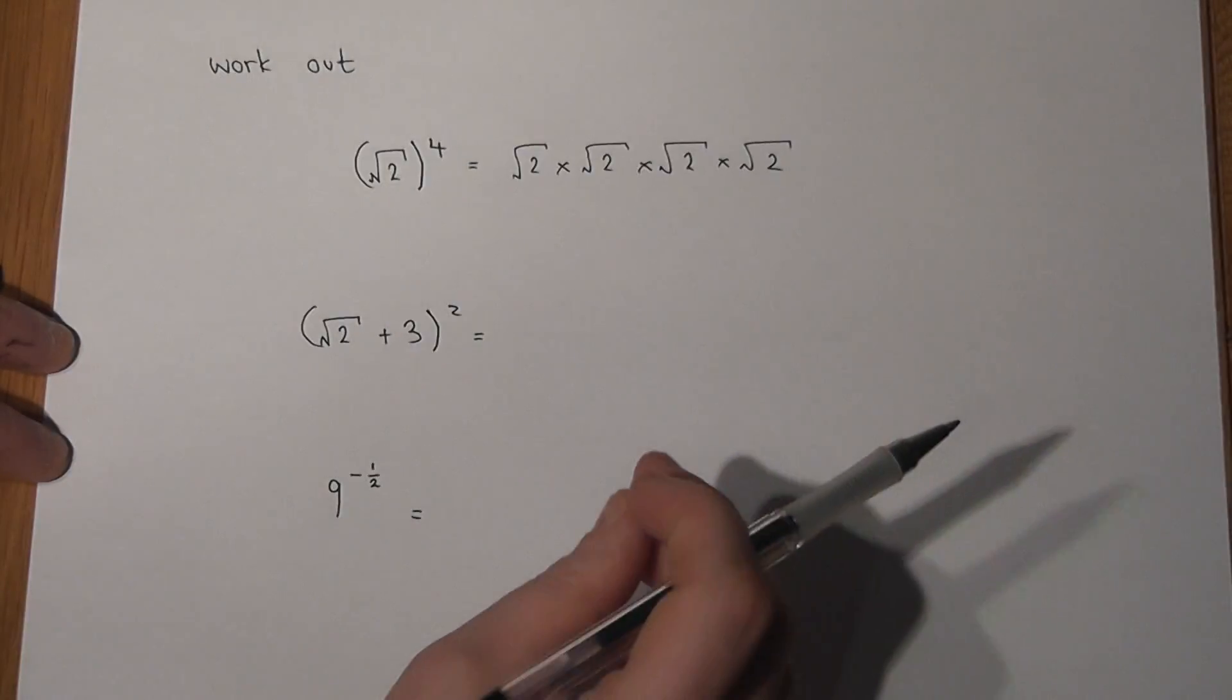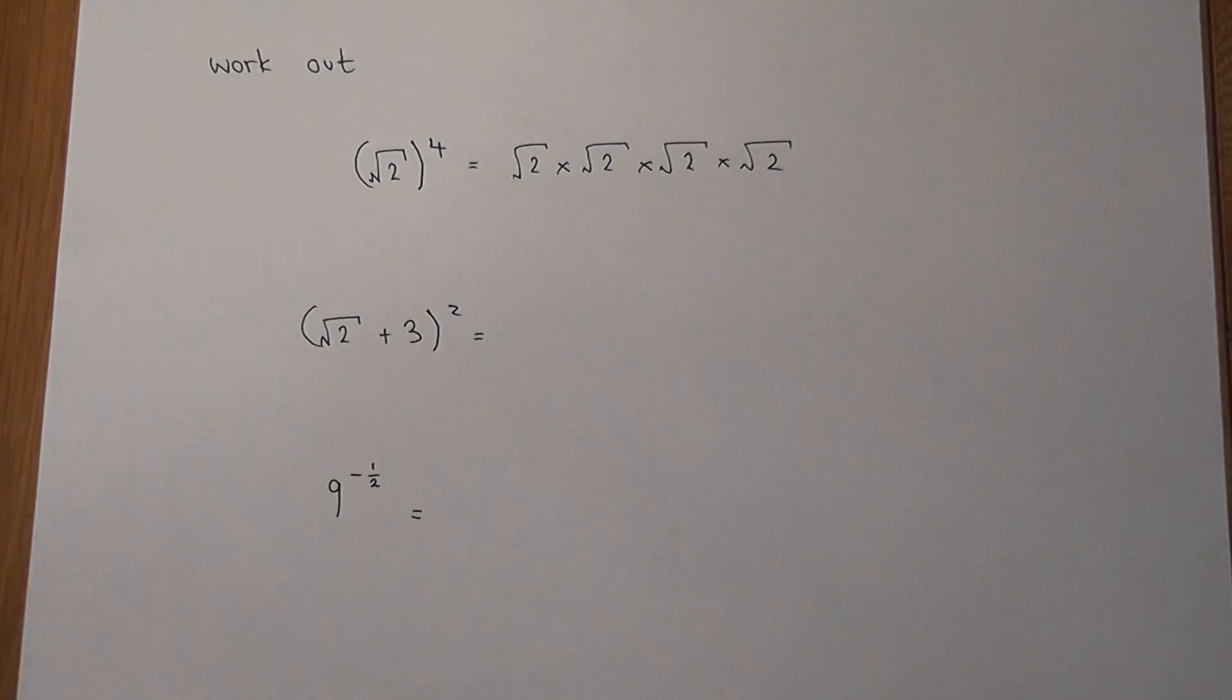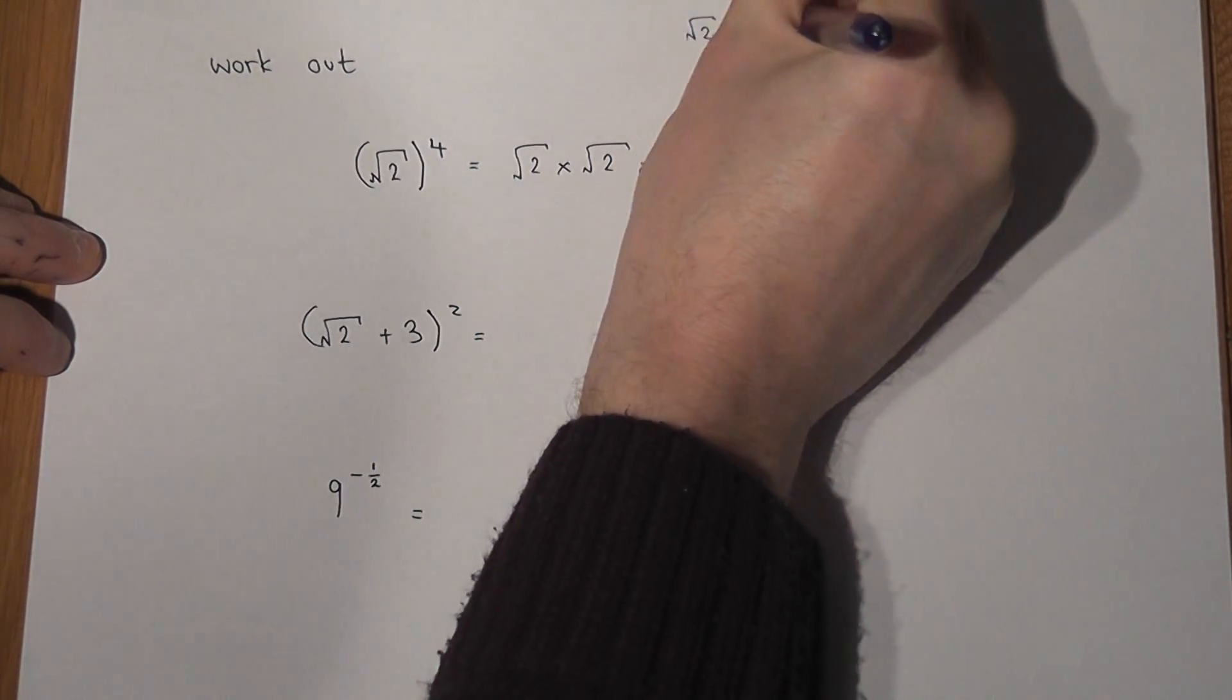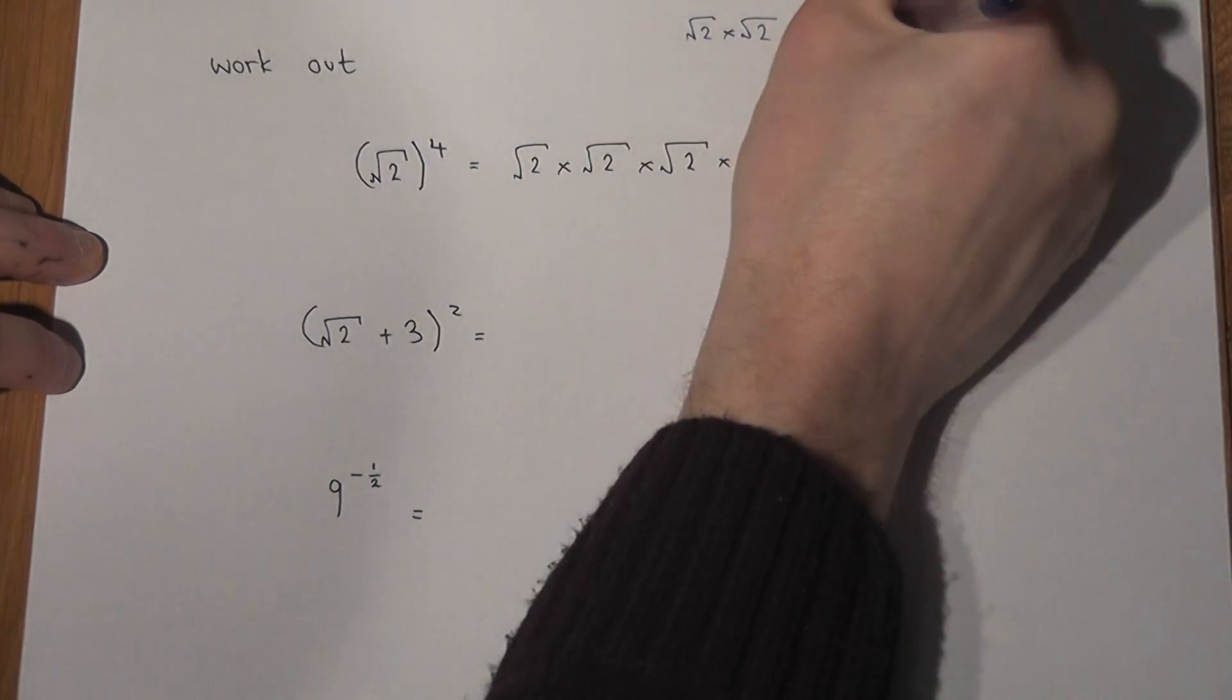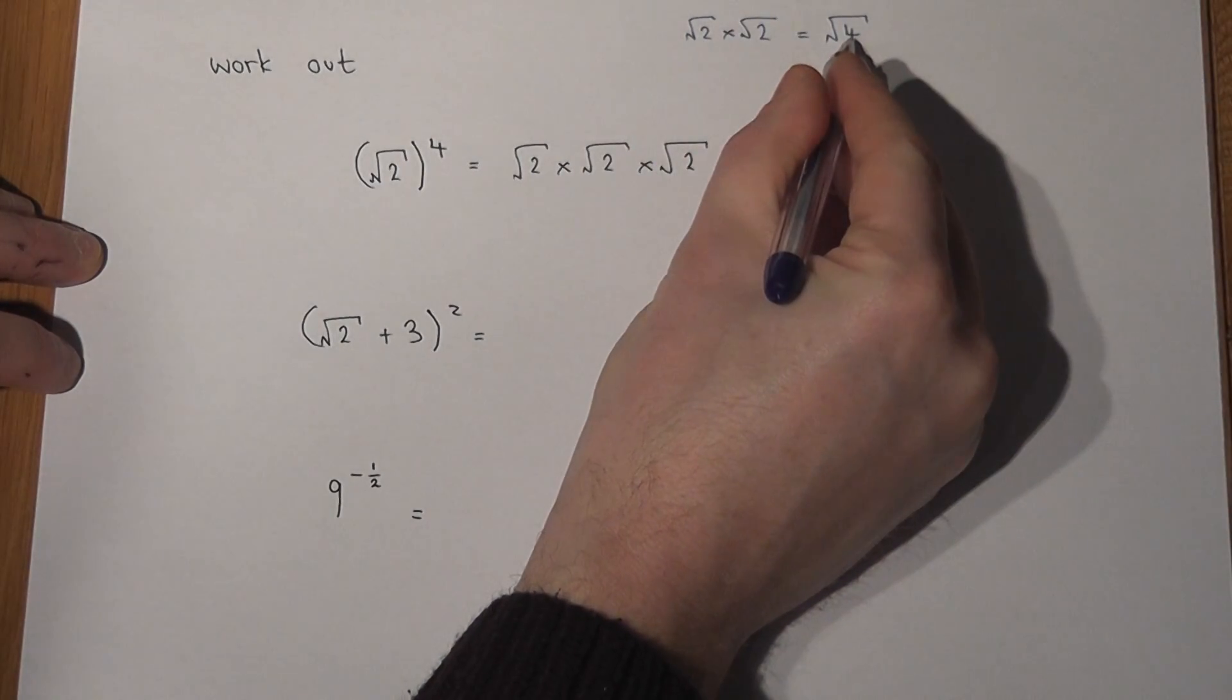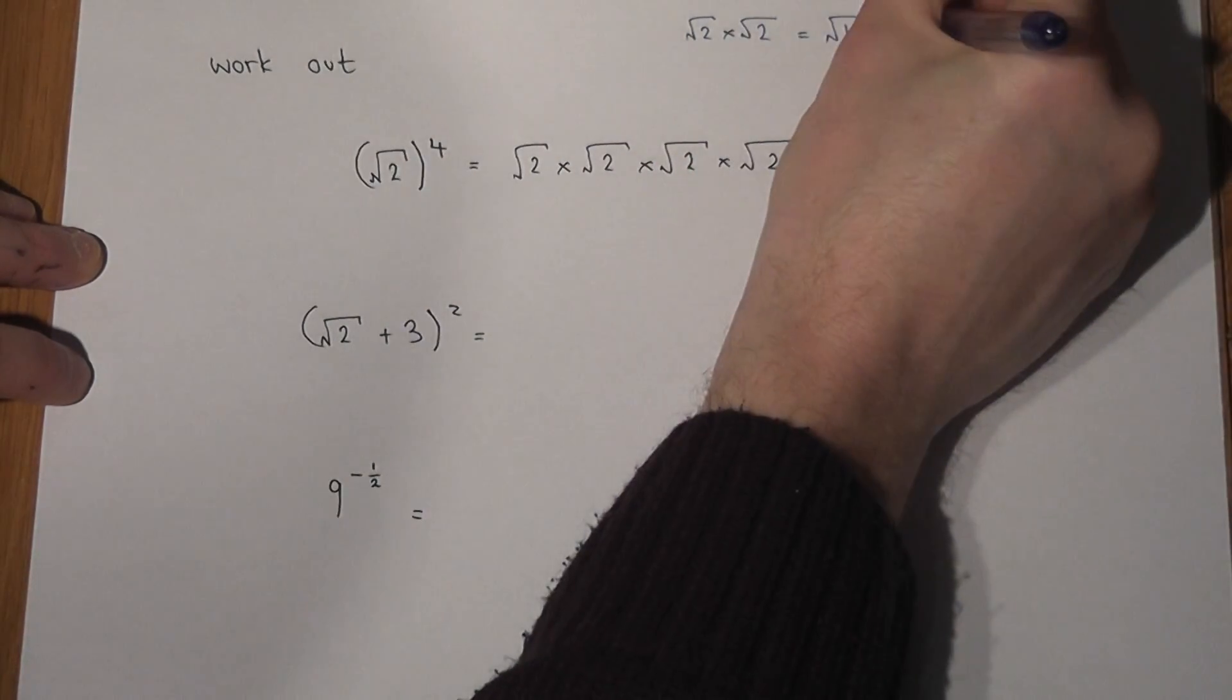We can then use a really important surd rule, which we can write out above. Basically, root of 2 times root of 2 is the same as square root of 4. 2 times 2 is 4, and root of 4 just goes back to 2.